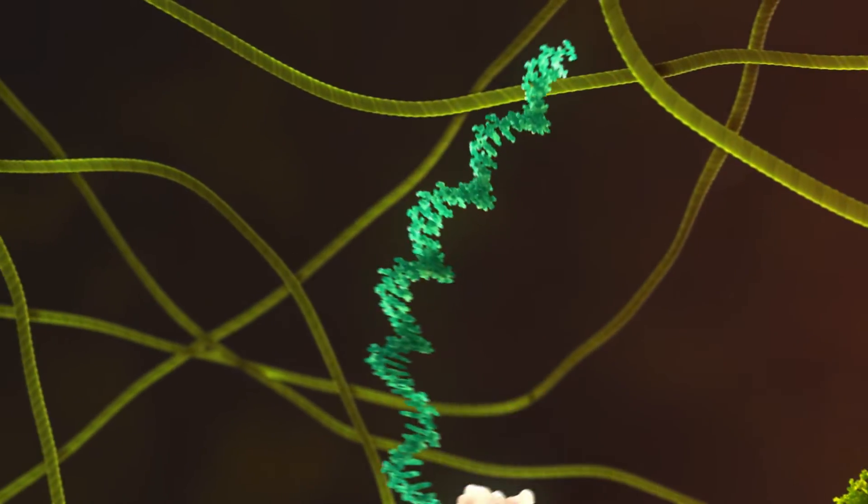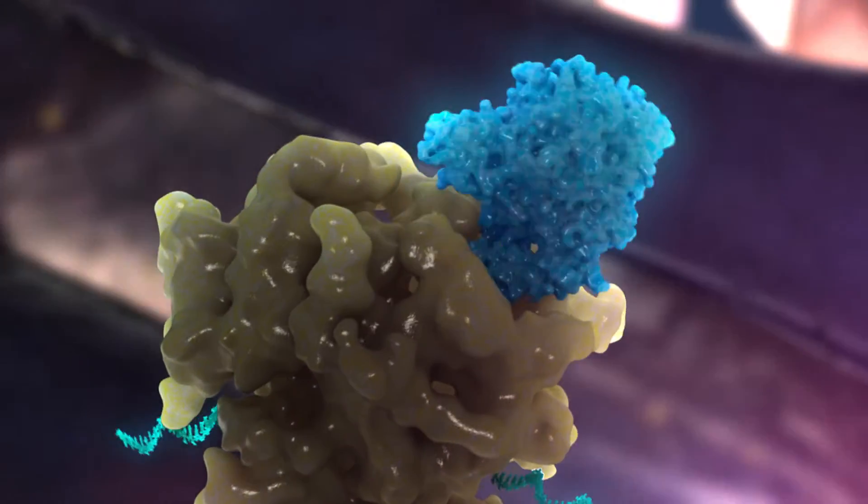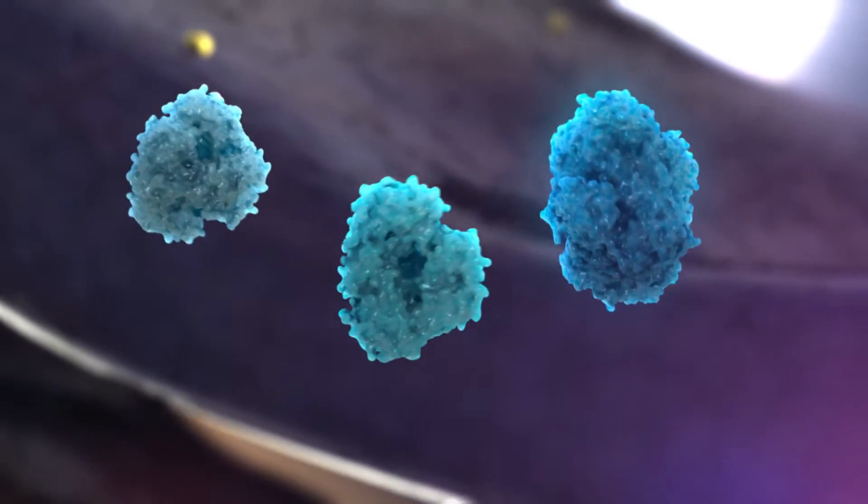The activated DNA produces strands of RNA which in turn assemble extremely powerful antioxidant enzymes like glutathione peroxidase, catalase and superoxide dismutase.